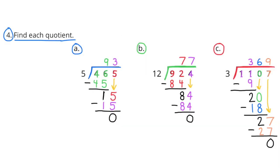Number 4, Find each quotient. A, 465 divided by 5. Well, I know that 9 times 5 is 45, so 90 times 5 is going to be 450. So, 465 minus 450 equals 15. I know that 5 goes into 15 3 times, so I put a 3 in the 1s place. 3 times 5 is 15. 15 minus 15 equals 0. So, 465 divided by 5 equals 93.